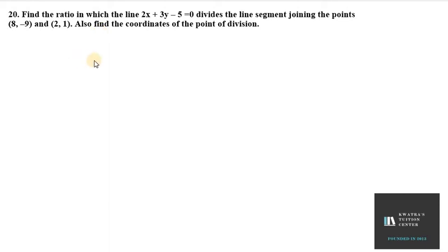Hello everyone, let's start with question number 20 of exercise 7.3. It says find the ratio in which the line 2x plus 3y minus 5 equals 0 divides the line segment joining the points (8, -9) and (2, 1). So we have 2 points here. I will take it as A and B. A is (8, -9) and B is (2, 1).